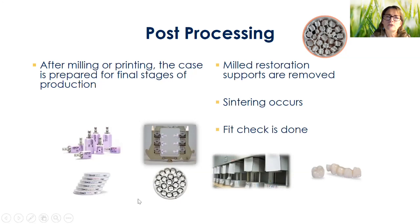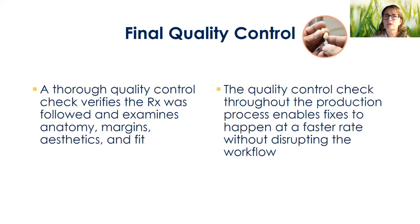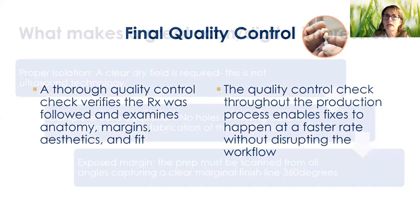This is what I referred to earlier as a puck — the bottom circle piece where you could get probably almost 20 single units, versus a block which will be for an individual restoration. After the milling, it does get stained and glazed, more similar to a traditional crown that you would be accustomed to, with final quality control.